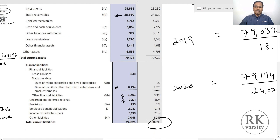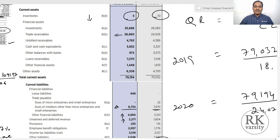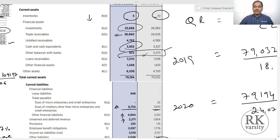We need to understand why trade receivables are increasing — is it due to higher sales or an ineffective collection process? Similarly for trade payables: why is the company delaying its payments? It doesn't appear to be a cash problem, but cash equivalents and other bank balances have actually decreased. There was nearly a ₹4,500 crore decrease in other bank balances, and investments also decreased. To understand where this cash went, you need to look at the cash flow statement — whether cash was used for investing activities or whether a decrease in profits caused the company to draw down bank balances.